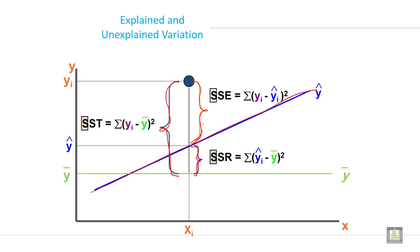And above the regression line, whatever gap you have is called explained variation. So just remember total variation, explained variation, and unexplained variation through the graph.